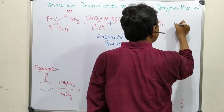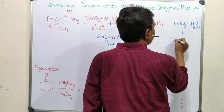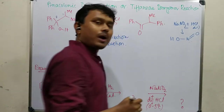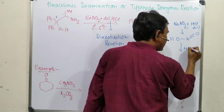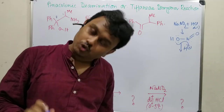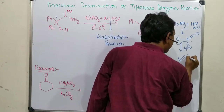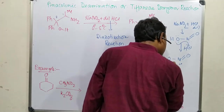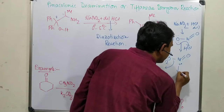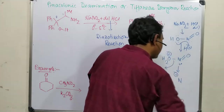The diazotization reagent is produced as follows: NaNO₂ plus HCl produces HNO₂. This HNO₂, in the presence of acid (H⁺), gets protonated. You may argue that the oxygen could be protonated, but the protonation occurs at this oxygen, producing an —OH₂⁺ group. This OH₂⁺ can leave, and after leaving, it produces NO₂⁺.